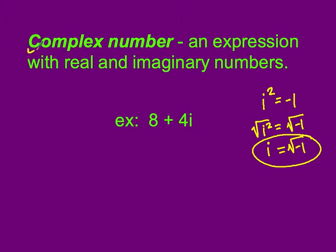That number becomes a complex number. A complex number does not just need to be an imaginary number — it might also have a real component and an imaginary component. For example, the number 8 plus 4i has a real component of 8 and an imaginary component of 4i. Together, this makes a complex number.